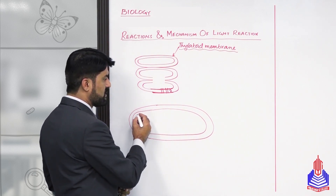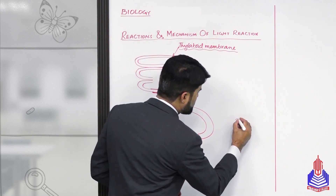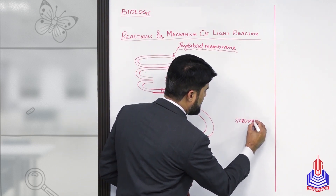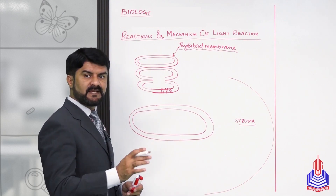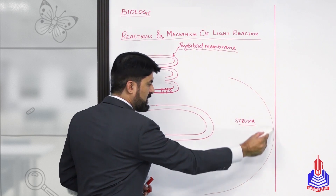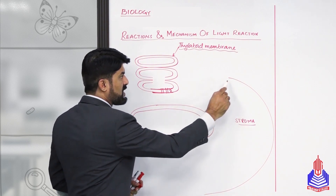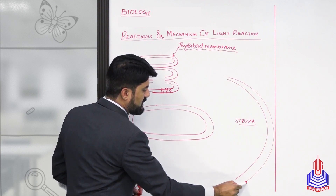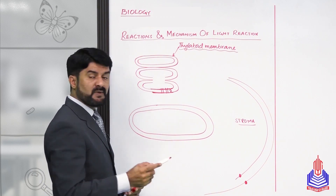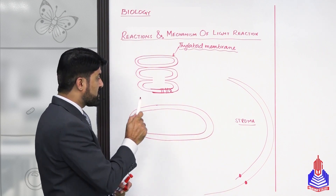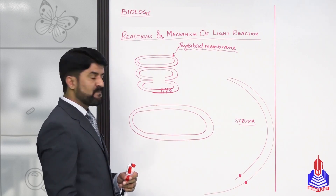Now, the thylakoid membrane has two surfaces — an inner surface and an outer surface. The inner surface faces the lumen of the granum. The outer surface opens into the stroma. And outside all of this is the plasma membrane of the chloroplast — do not confuse the thylakoid membrane with the chloroplast membrane, which is a double membrane.